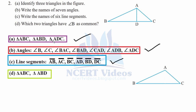Part D — which two triangles have angle B as common? The two triangles are: triangle ABC and triangle ABD. Angle B is common to both of these triangles. That was question number two.